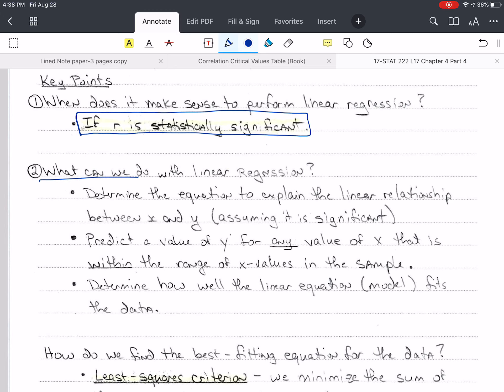What can we do with linear regression? We can determine the equation of the line that explains the relationship between X and Y, assuming that it's significant. We can predict the value of Y.